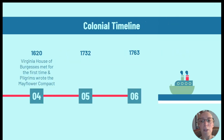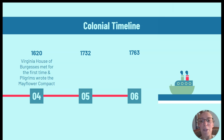The very next year, the House of Burgesses in Virginia met for the first time, and it's also the year that the Pilgrims wrote the Mayflower Compact. Both of those are about more people having political rights. The House of Burgesses was made up of white men who owned enslaved people, and in the next unit you will see that they became one of the leading voices crying out against the English king when they felt their political rights were being taken away.